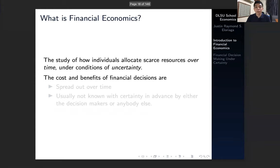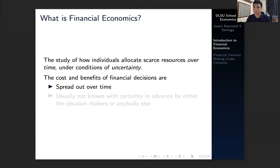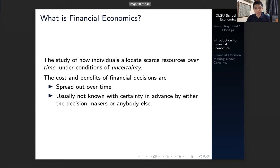The costs and benefits of financial decisions are as follows. Financial decisions are spread out over time — meaning you make decisions today and also tomorrow, and your decisions tomorrow may differ from what you have chosen today. The conditions of the market are usually not known with certainty or in advance by either the decision maker or anybody else in the process.